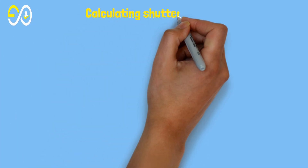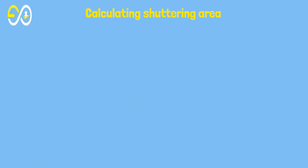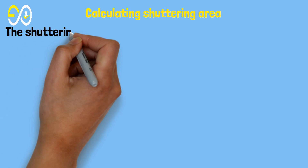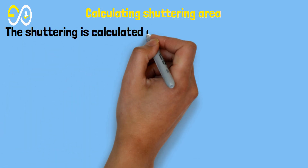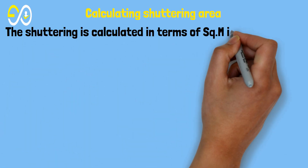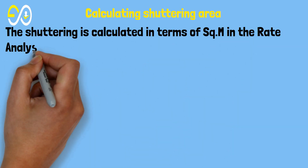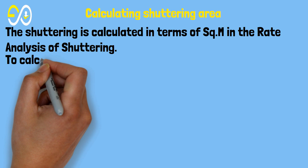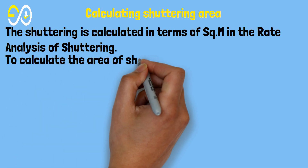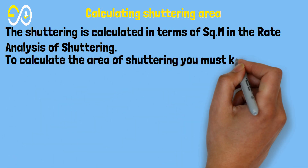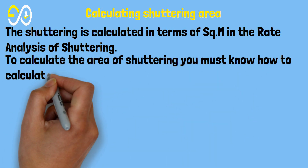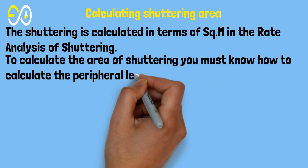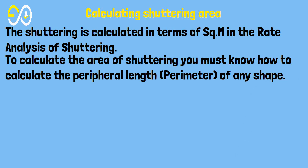Calculating shuttering area. The shuttering is calculated in terms of square meters in the rate analysis of shuttering. To calculate the area of shuttering, you must know how to calculate the peripheral length, or perimeter, of any shape.